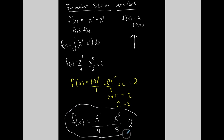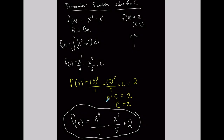Here is my function whose derivative is x to the third minus x to the fourth. If I derive it — bringing the 5 down, plus 0 because the derivative of a constant is 0 — the derivative satisfies what we initially had, and it satisfies the point that was given to us. This is called a particular solution.